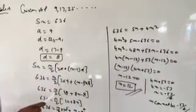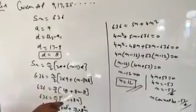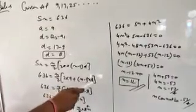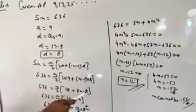636 equal to N upon 2, 9 to the 18 plus 8 multiply by N minus 1, 8 multiply N minus 8.